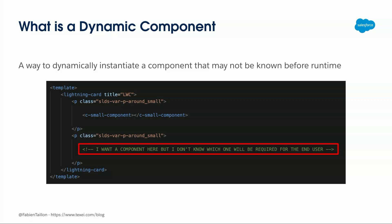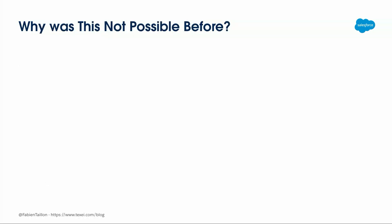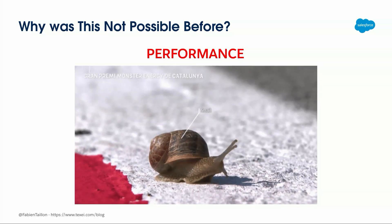I want to have this component dynamic and not hard-coded in the markup. If you've been using Aura for some time, you know it was available in Aura but still not in LWC. So you may be wondering why it was not possible before — why did we have to wait so long to get Dynamic Components in LWC? The main reason is performance.